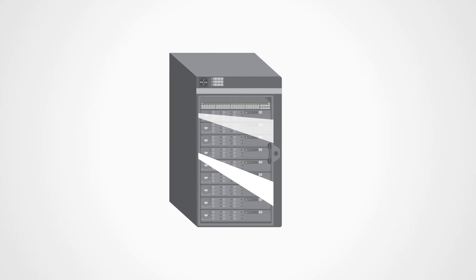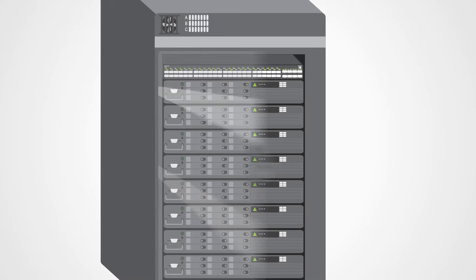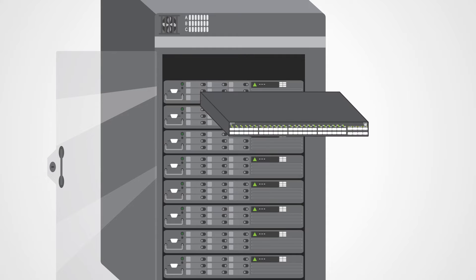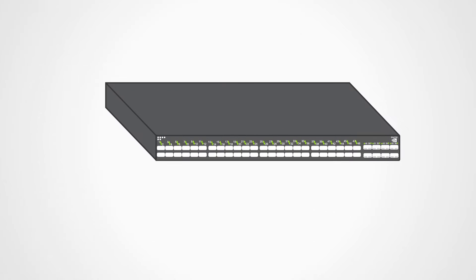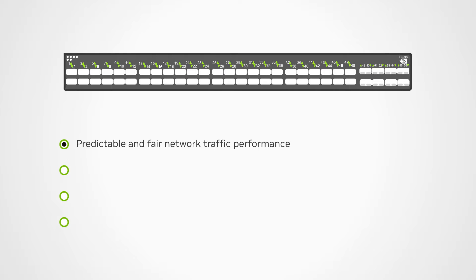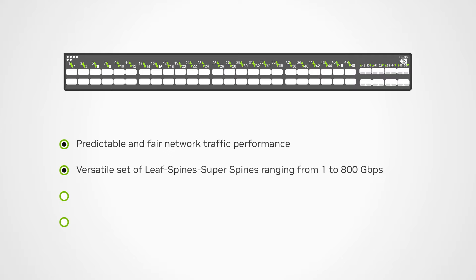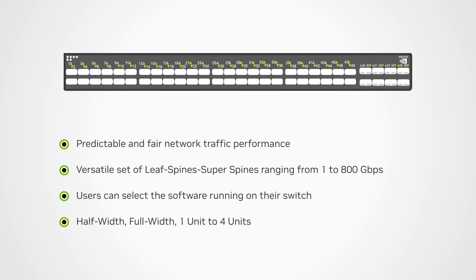Welcome! In this video we'll learn about NVIDIA's Ethernet switch systems and the benefits and features they offer the data center environment. These include predictable and fair traffic performance, a versatile set of leaf spines and super spines ranging from 1 Gigabit Ethernet to 800 Gigabits Ethernet. Open Ethernet architecture allows users to choose what software runs on their switch. Switches come in various sizes: half-width, full-width, 1U to 4U.